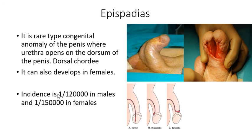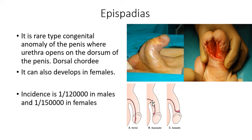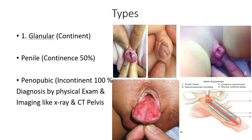A few words about epispadias. It is a rare congenital anomaly of the penis where the urethra opens on the dorsum of the penis, with dorsal chordee — bending toward the abdomen. It can also develop in females. Incidence is 1 in 120,000 males and 1 in 150,000 females — very rare compared to hypospadias. There are three types: glandular, penile, and penopubic.